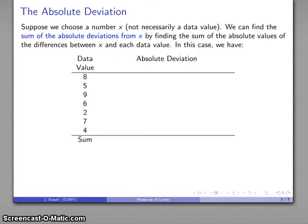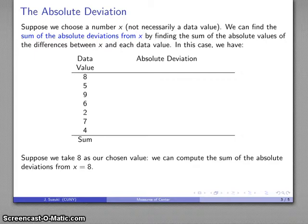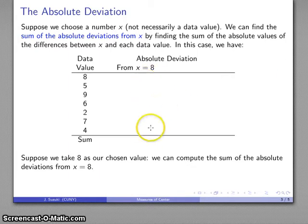For example, here's my set of data values: 8, 5, 9, 6, 2, 7, 4. I want to look at the absolute deviation from some chosen value — maybe I'll take 8. So I want to find the sum of the absolute deviations from x equals 8. Once I figure out what those absolute deviations are, I'll add them all together and get my sum.